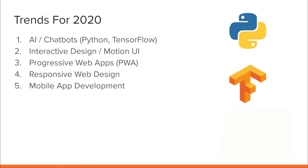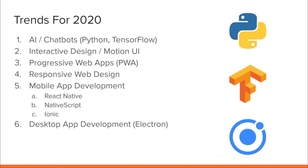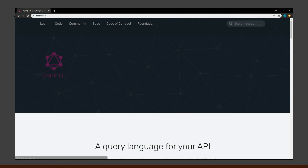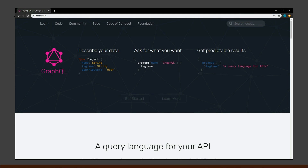Next is mobile app development. We can build native mobile apps without knowing Java or Swift. There are React Native, NativeScript, and Ionic. Ionic used to be hybrid only, but now they have a native option as well. Next is desktop app development with Electron. Electron uses Chromium and Node.js. It's cross-platform with support for Windows, Mac, and Linux. There are a lot of desktop apps today built with Electron, such as VS Code. Next on the list is GraphQL — a new way of thinking about APIs. You are able to ask only for what you want, and it's easier to write queries, very similar to JSON.